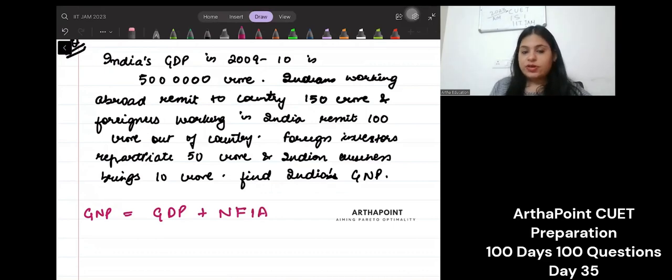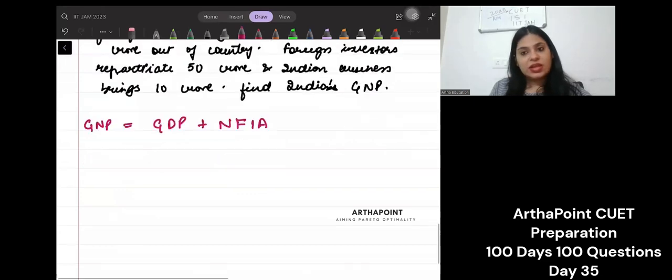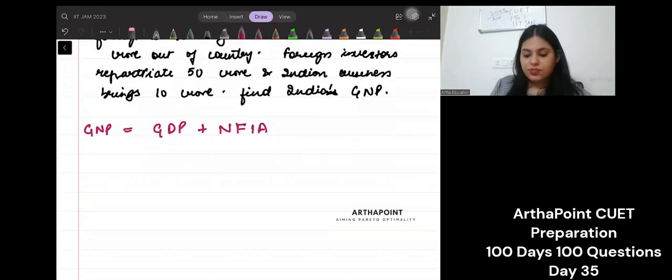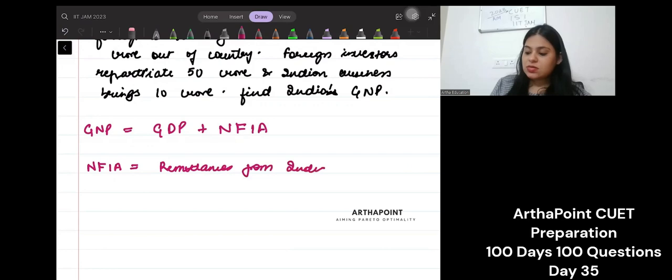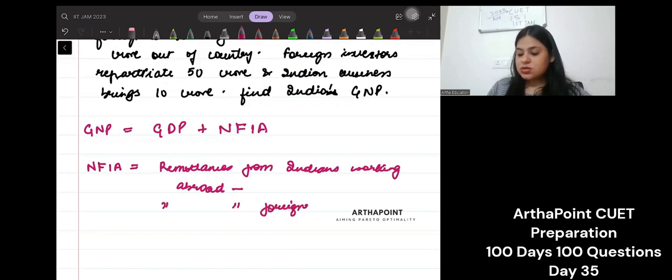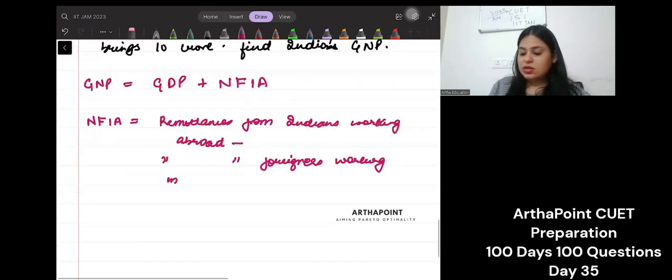I will just give you the formula for net factor income from abroad and then you can go ahead and try this question yourself. Net factor income from abroad is remittances from Indians working abroad minus remittances from foreigners working in India.